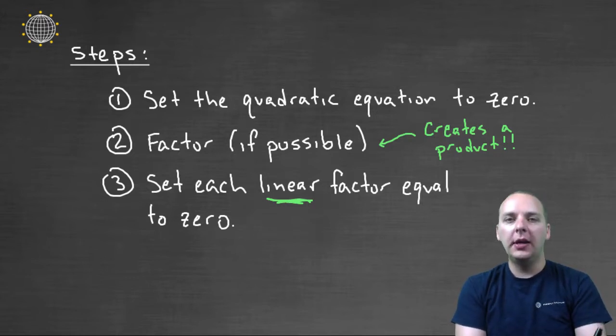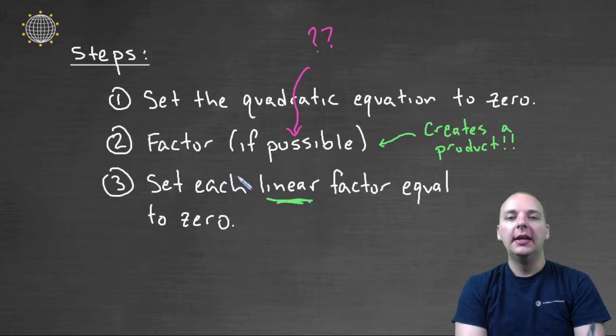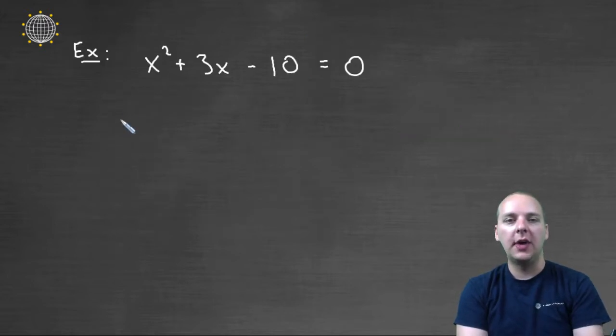Now before we get into some examples, I made a little side comment here. If it's possible to factor. If it can't be factored, we do have some other techniques that might be able to help, but we'll cover those in a later video in the course. But for now we're just going to solve by factoring only. So we're going to assume most of our quadratics here are going to factor.